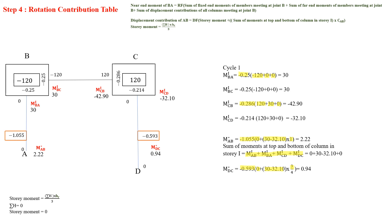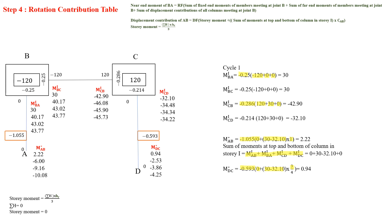The first cycle is complete, then the second cycle is completed, giving values: M dash BA equals 40.17, M dash BC equals 40.17, M dash CB equals minus 46.08, M dash CD equals minus 34.48, M star AB equals minus 6, and M star DC equals minus 2.53. Third and fourth cycles are completed. Comparing the third and fourth cycles, the values are almost similar, so distribution is stopped and the final converged values are recorded.